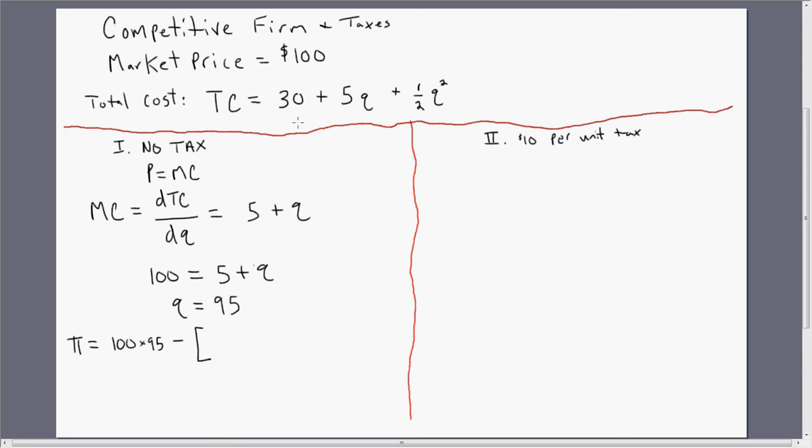We're going to evaluate the firm's total cost equation at the profit maximizing output level of 95 units. 30 plus 5 times 95, and then plus 1 half, 95 squared. And this will equal $4,482.50.